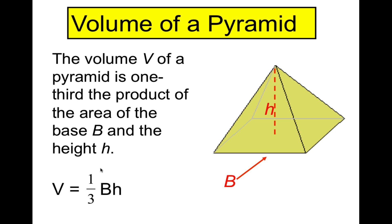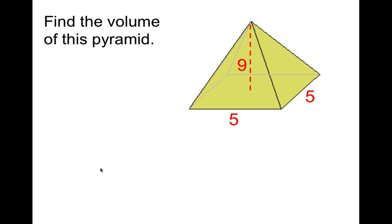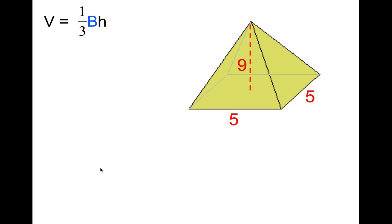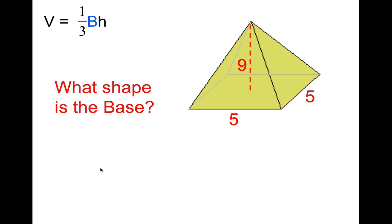We'll do two examples — I'll do one and you do one. First, please draw this diagram and we're going to find the volume of this pyramid. Look at the pyramid shown here: what is the height and what shape is the base? The volume formula is V = (1/3) × B × H, where B is the area of the base. The base is a square, so we're going to use the formula for a square to find the area.